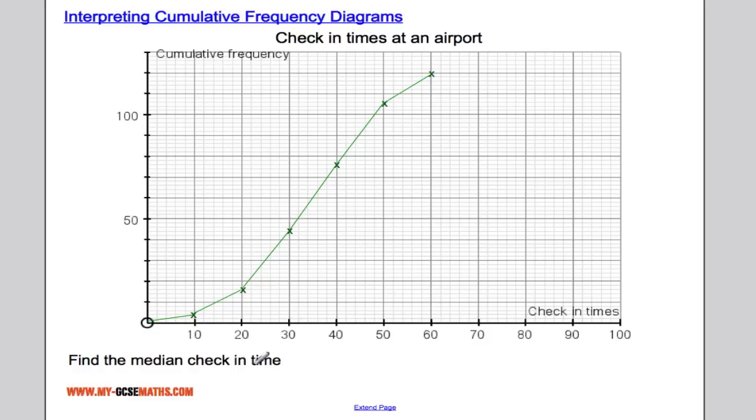If I want to find the median check-in time, I need to find where the middle person would be. Well, if there's 120 people, that means the middle person will be roughly around the 60th person. So I can read across and down. And across and down, we get 35 minutes. So the median waiting time is 35 minutes.